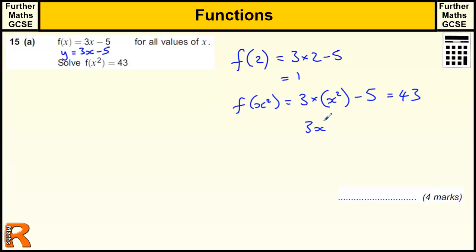So essentially we've just got this fairly straightforward quadratic equation we've got to solve, where we can just add the 5 to get 48, divide by the 3, oops I missed the square on there, divide by the 3 to get 16, and therefore x equals the square root of 16, which is equal to 4 or minus 4.